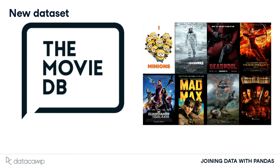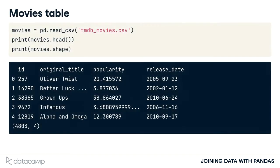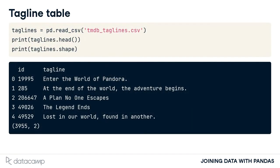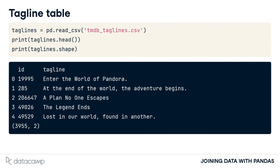In our next example, we have two tables from the movies database that we want to merge. Our first table, named Movies, holds information about individual movies such as the title name and its popularity. Additionally, each movie is given an ID number. Our table starts with 4,803 rows of data. Our second table is named Taglines, which contains a movie ID number and a tagline for the movie. Notice that this table has almost 4,000 rows of data, so it contains fewer movies than the Movies table.